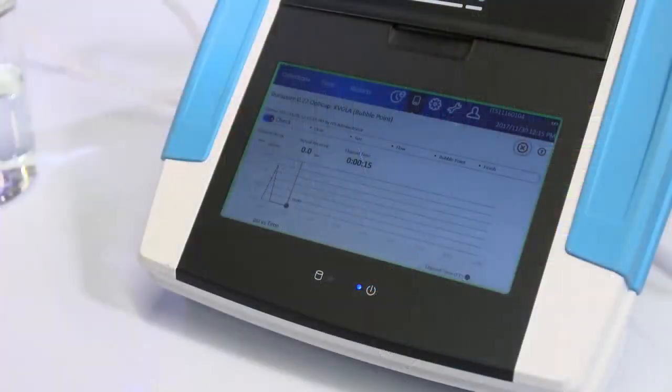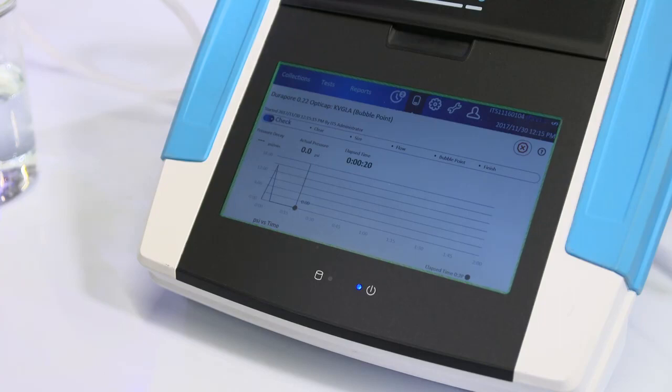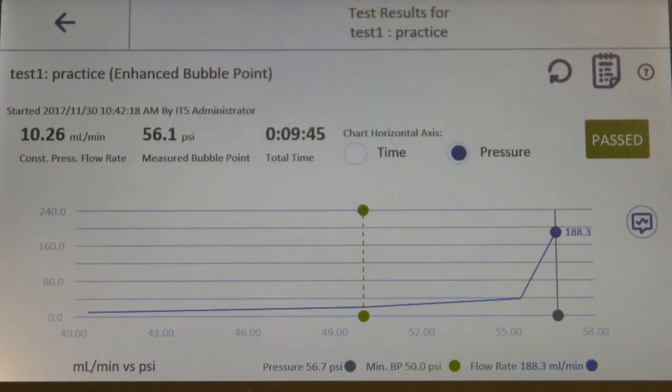Test progress can be monitored during the test. All integrity test instruments typically display some combination of system pressure, pressure decay, or gas flow rate during the test. By monitoring the pressure or flow trends, you can check for problems.